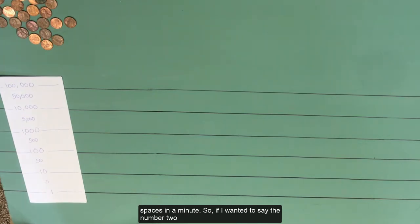And we're going to get to the spaces in a minute. So if I wanted to say the number 2, I would put 2 pennies on the 1s line. If I wanted to do the number 20, I would put 2 pennies on the 10s line. So now that's 22.